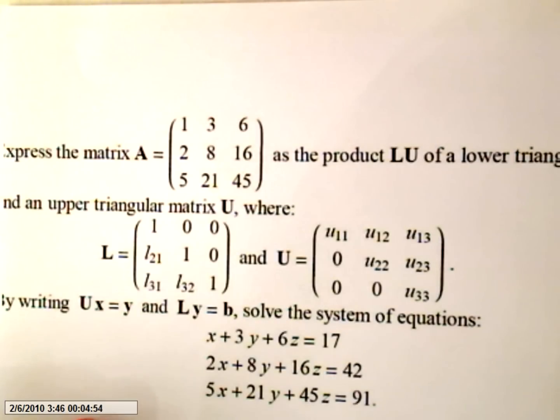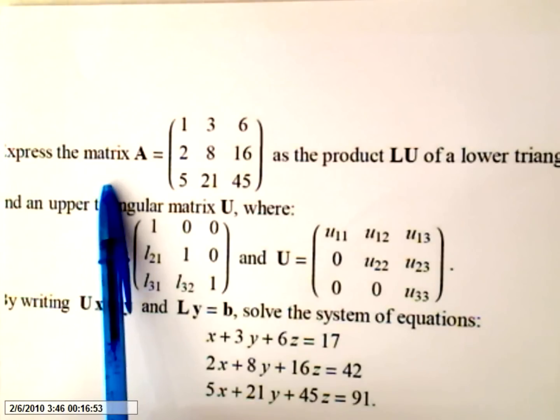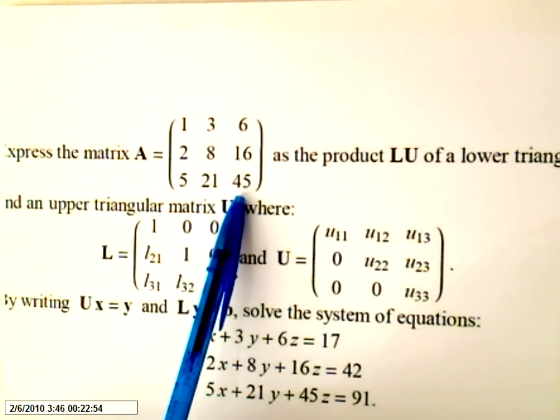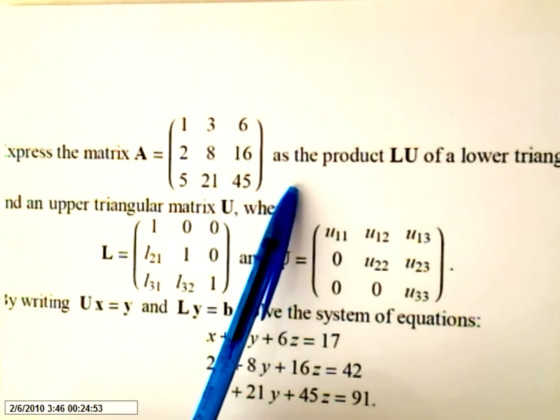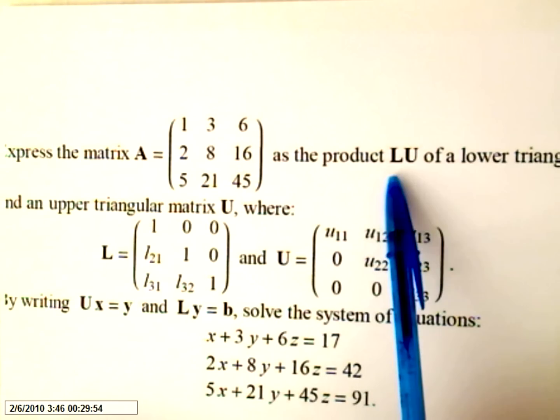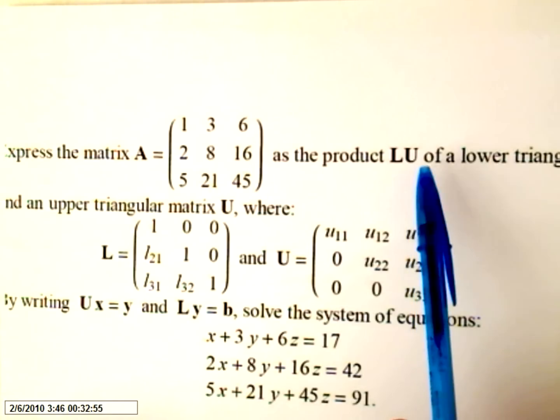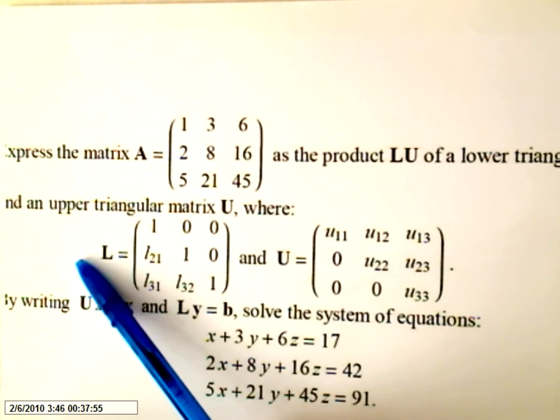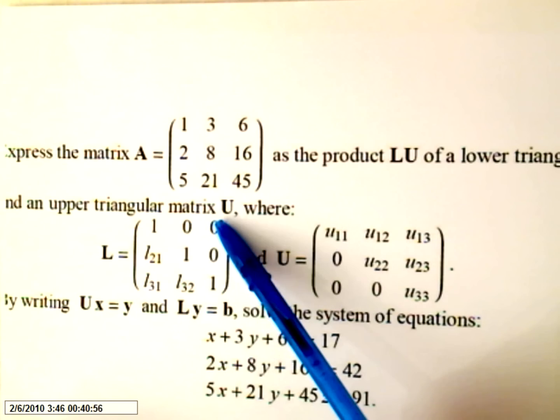This video is the answer to one question. The question is, express the matrix A as the product LU, meaning lower and upper, of a lower triangular matrix L and an upper triangular matrix U.